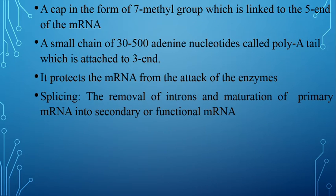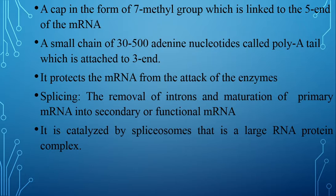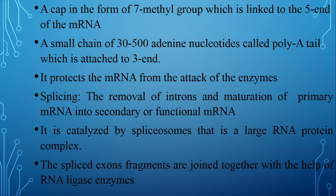The next modification is splicing — the removal of introns and maturation of primary messenger RNA into secondary or functional messenger RNA. The RNA contains non-coding regions called introns, and these introns are removed. Primary messenger RNA is converted into functional, or secondary, messenger RNA. This process is called splicing and is carried out by enzymes called spliceosomes, which are large RNA-protein complexes.